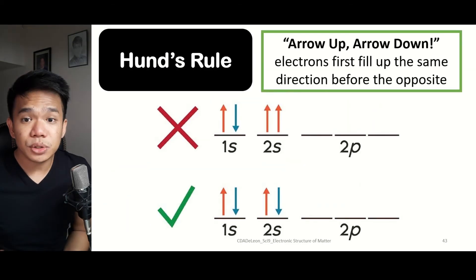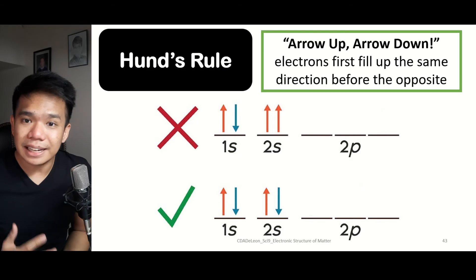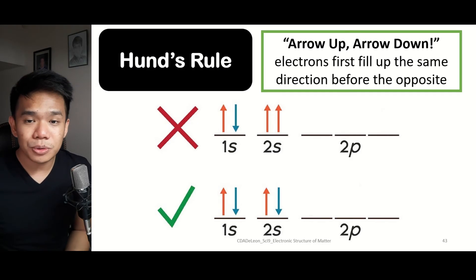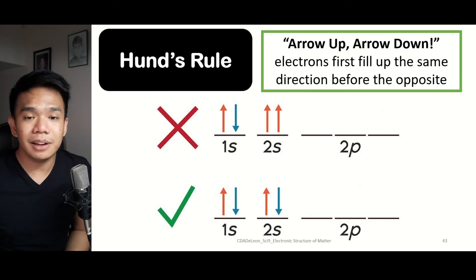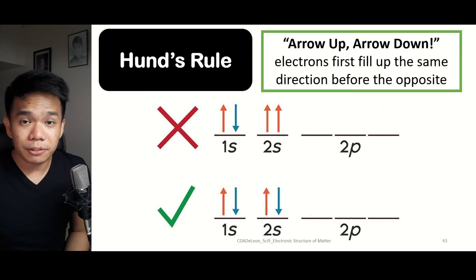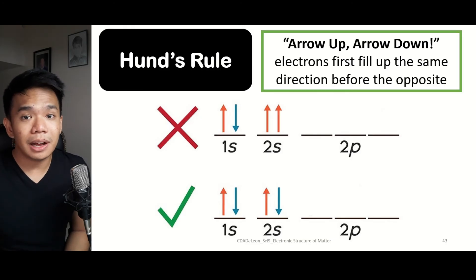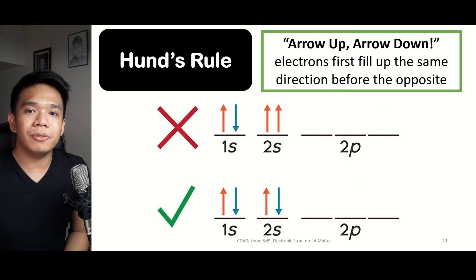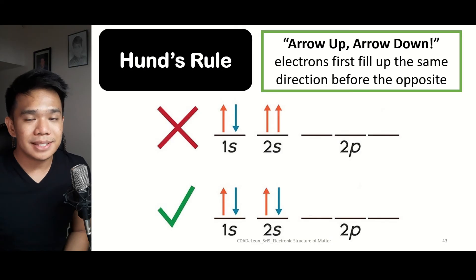Lastly, we have Hund's Rule, which states that electrons should be filled up first in one specific direction before going to another. Arrows pointing upward denote electrons moving in the clockwise direction, while arrows pointing downward refer to electrons moving in the counterclockwise direction. We need to fill up the clockwise-direction electrons first before proceeding to the counterclockwise electrons.